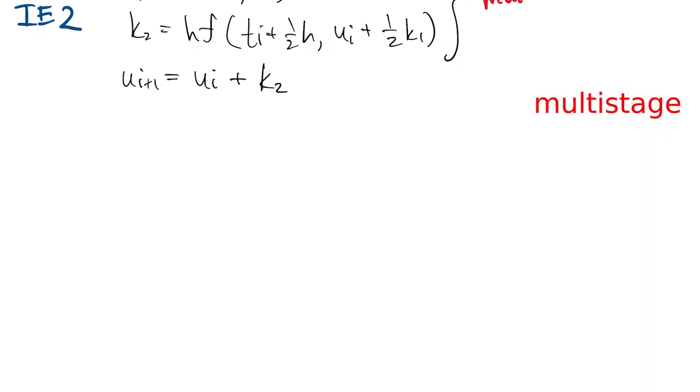Improved Euler is an example of what we call a multi-stage method. Each evaluation of f counts as a stage. Here we have two stages for each time step.